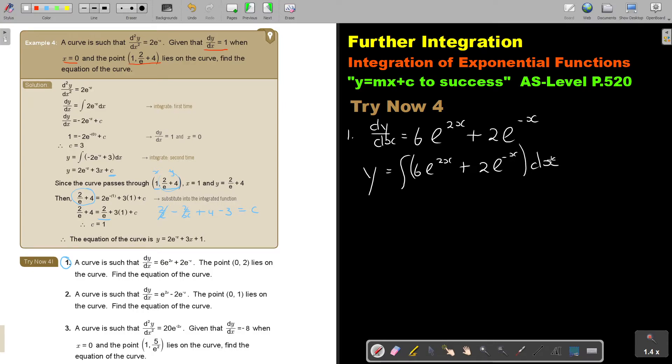So I'm going to integrate this. So if I integrate this, I'm going to get y is equal to, now I'm going to start integrating it. So it's going to be 6 over 2e^(2x). Don't forget, it's 2.